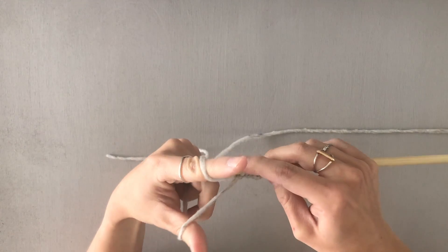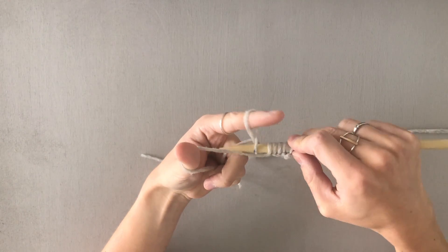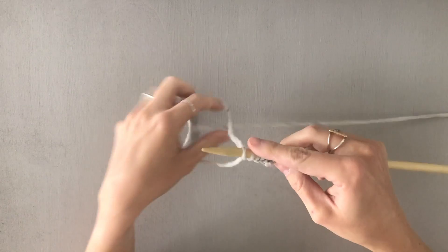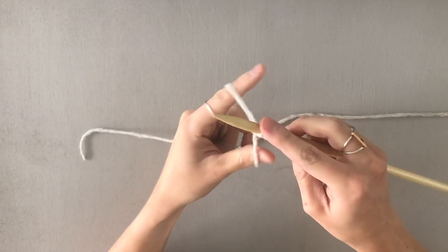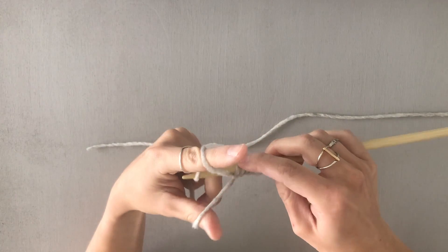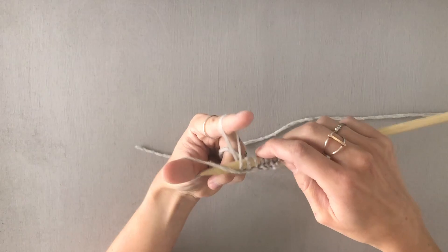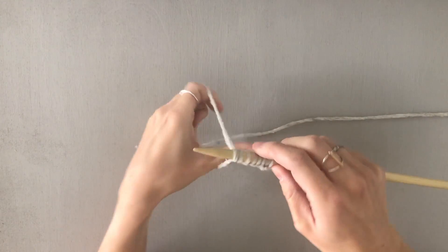Down your pointer finger grabbing that strand of yarn, down under your thumb and then through the loop. I'll show you a couple more times. Down and then under and through. Line it tight.